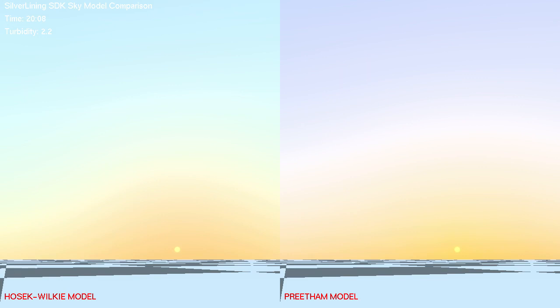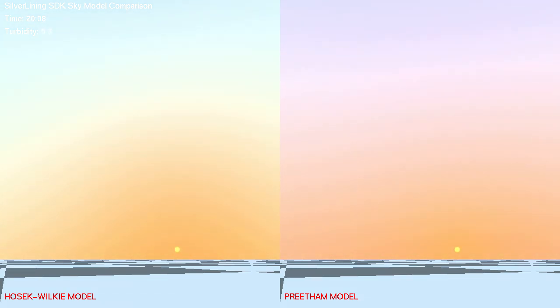You can make the Hosek-Wilke model more dramatic by increasing the simulated turbidity of the atmosphere, which I'll crank up right now. That's basically a measure of how hazy it is. And you can see that as I increase the turbidity to higher levels, the Preetham model kind of goes berserk, but Hosek-Wilke does the right thing. So if you do need to simulate more hazy or humid conditions, Hosek-Wilke is definitely better for that.